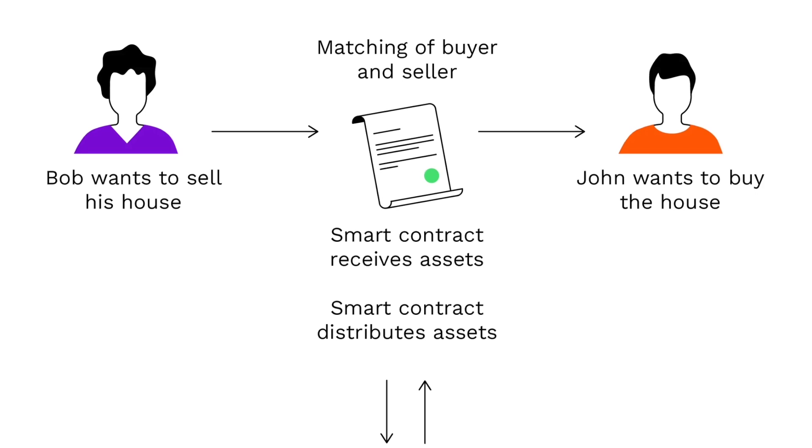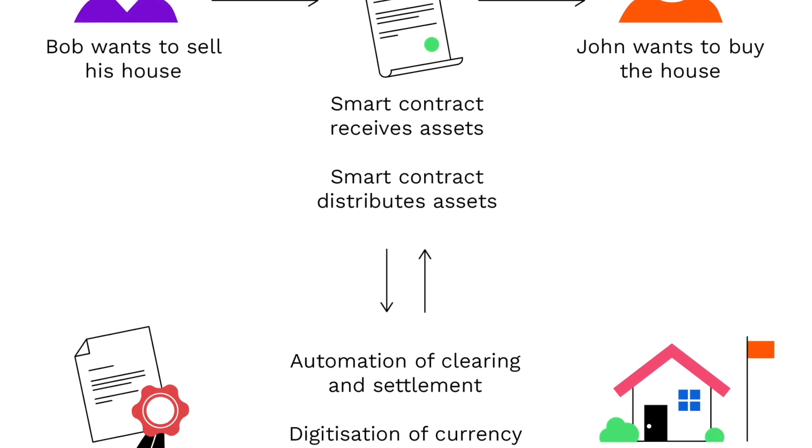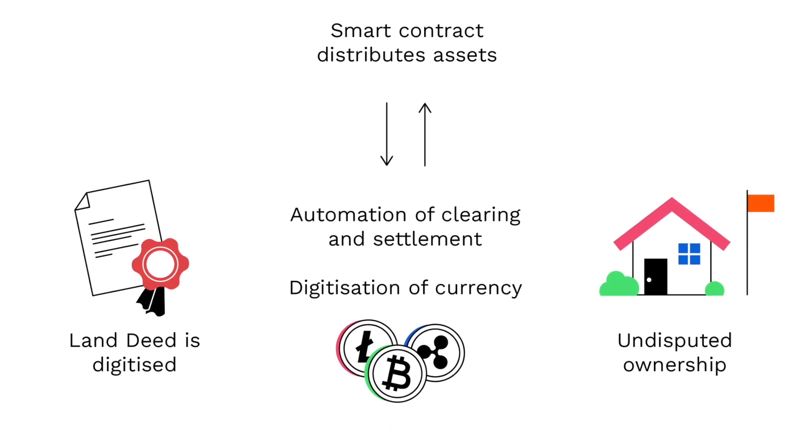The money cannot be released unless the house — or the title of the house — is also put into the smart contract. The smart contract receives the assets and then distributes them, enabling automation of clearing and settlement and digitization of currency. The trust is now between both parties equally. John wants to buy it, Bob wants to sell it — once it's in the middle, it'll get transacted. That's a quick overview of what smart contracts are and what they do.